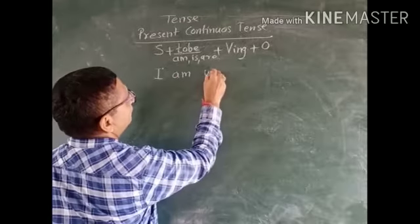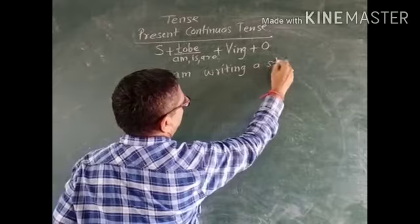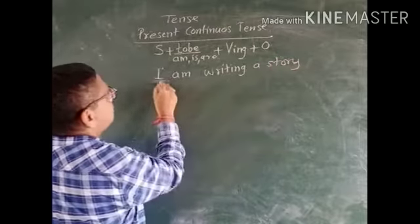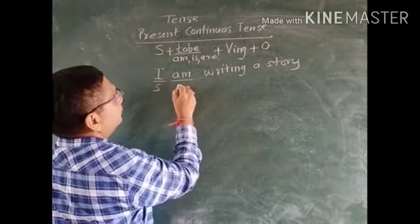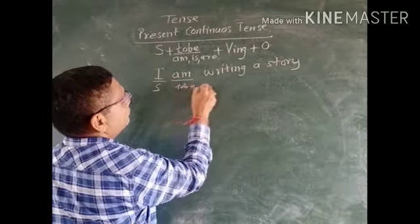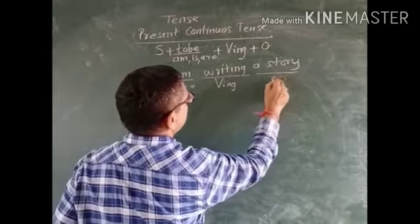Here, I am writing a story. This is subject, this is verb to be, its auxiliary verb, this is to be verb, this is verb in its ing form, and this is object.